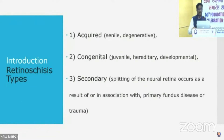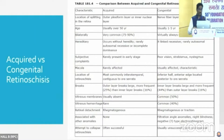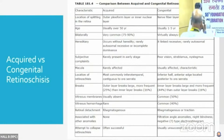We are all aware that there are three types of retinoschisis — it could be acquired, it could be congenital, and it could be secondary. Commonly we encounter the senile or degenerative retinoschisis. These are usually benign, but however they can cause vision-threatening complications. Looking at this table from Jacobiec, the differences between acquired and congenital are with respect to the age of presentation and how the breaks are. In the acquired variety, the outer retinal breaks are larger, while in the congenital variety, the inner layer breaks are larger. Presentation is usually in the first decade in the congenital variety, while in the acquired it's usually in the fifth decade.